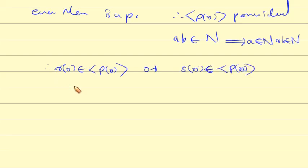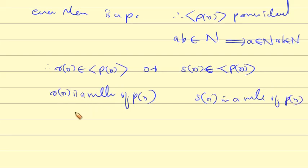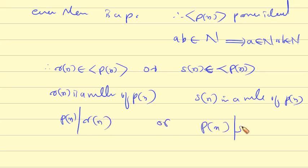If r(x) belongs to the ideal of p(x), then r(x) is a multiple of p(x), meaning p(x) divides r(x). If s(x) belongs to the ideal of p(x), then s(x) is a multiple of p(x), meaning p(x) divides s(x). Therefore, the theorem is verified.